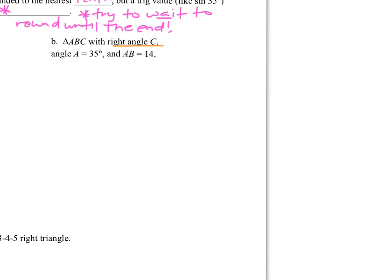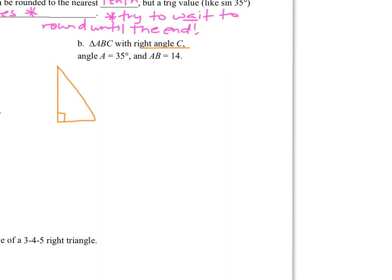In the example on the right, we have triangle ABC with right angle C. Create a right triangle, marking one angle as the right angle — that's where we put angle C. A and B go in either side. We know angle A is 35 degrees; I'll put an arc inside the triangle and label that 35. It says AB has a length of 14 — that's our hypotenuse.